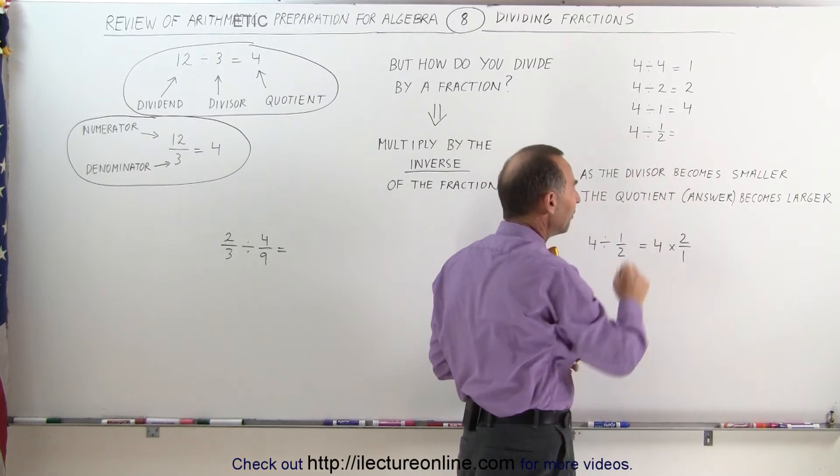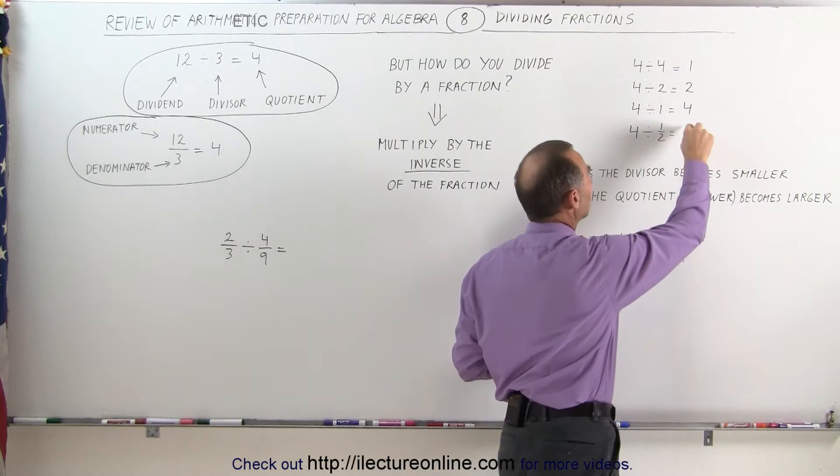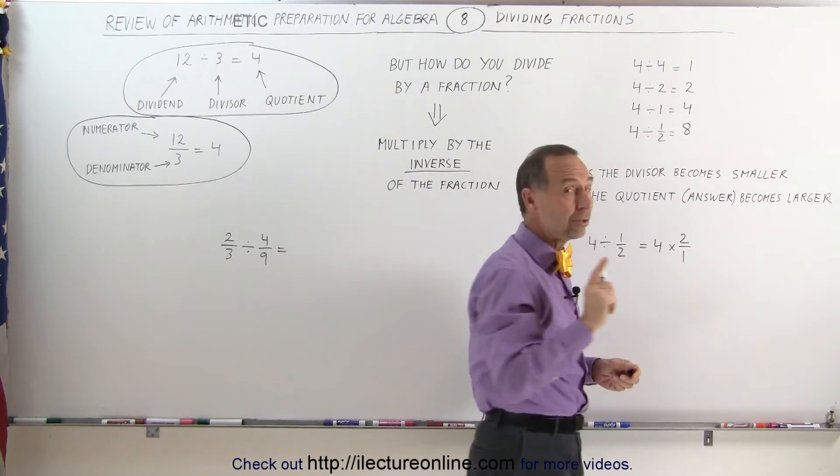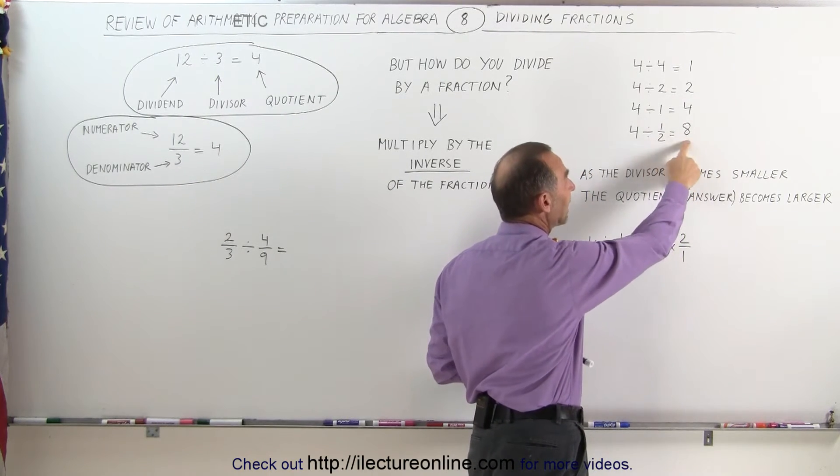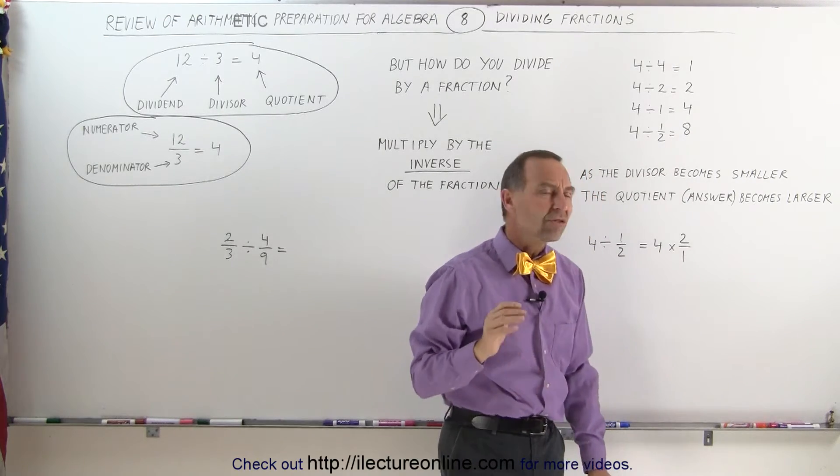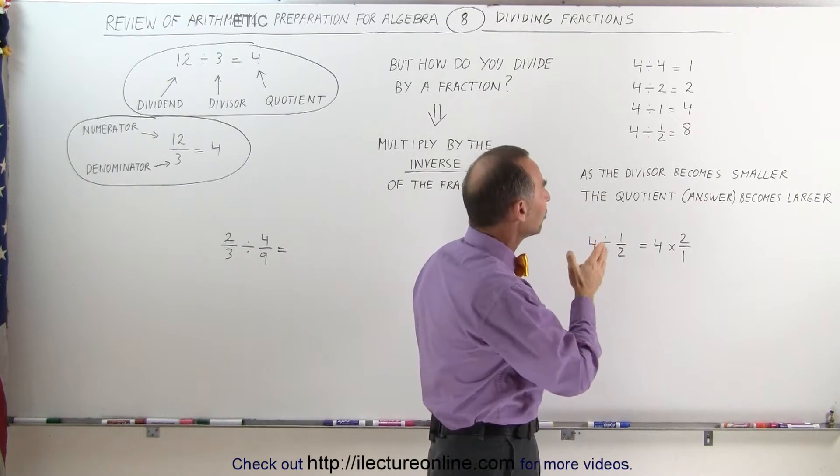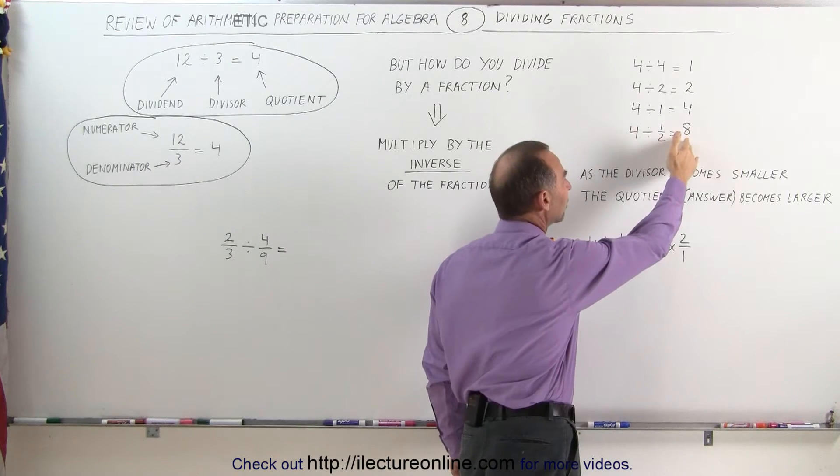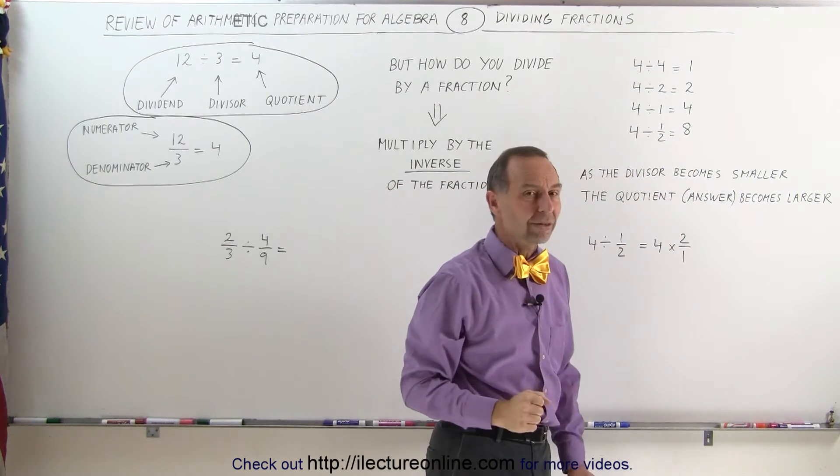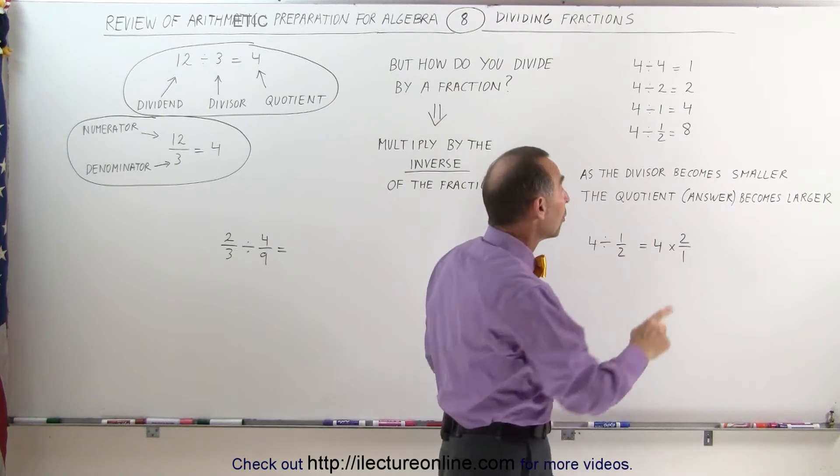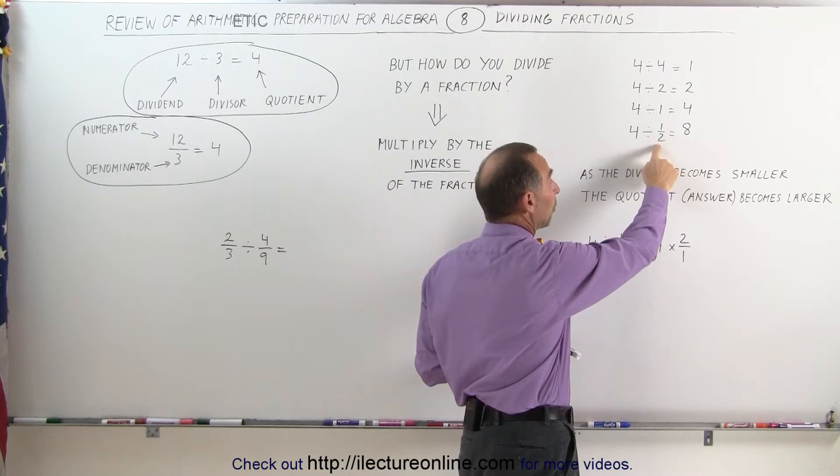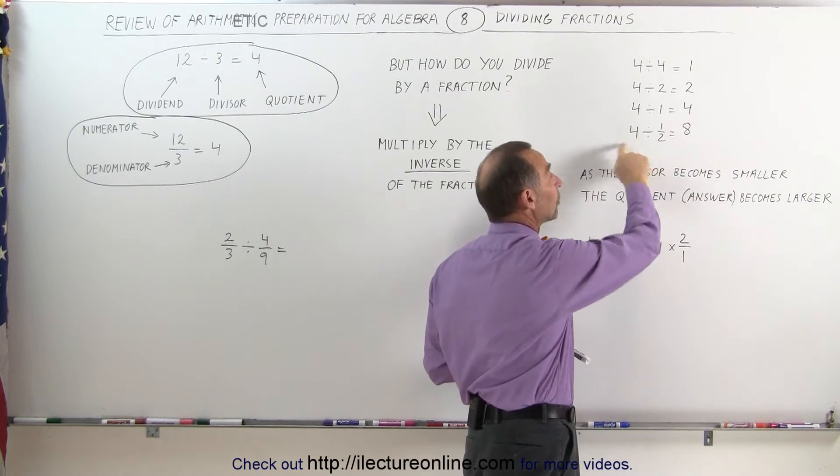4 divided by 1 half, the answer to that is 8. The reason you know that's true is because when you multiply 8 times 1 half, that gives you 4 again. What's strange about dividing by a fraction is that you end up with a number that's bigger than the original number you started with. Don't let that confuse you. When you divide by a number that's smaller than 1, you end up with a bigger number than what you started with.